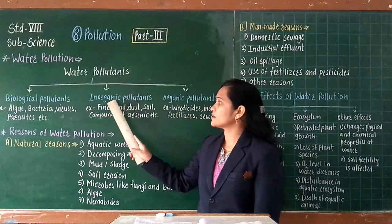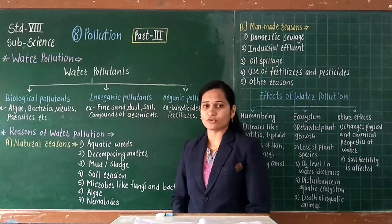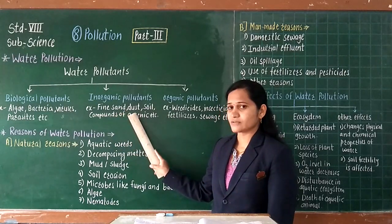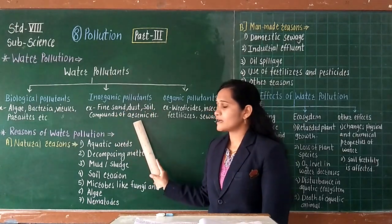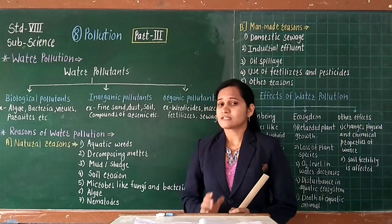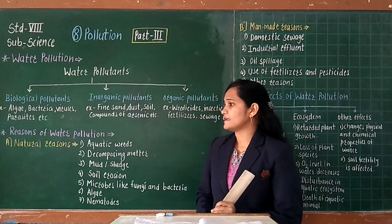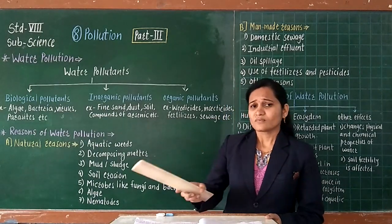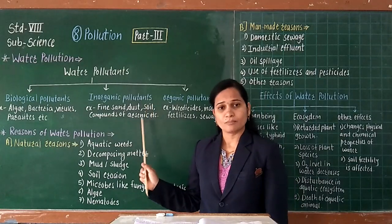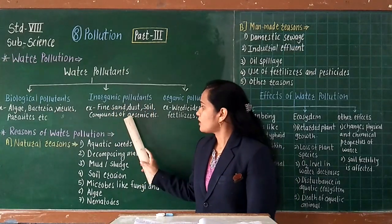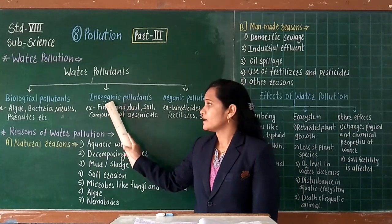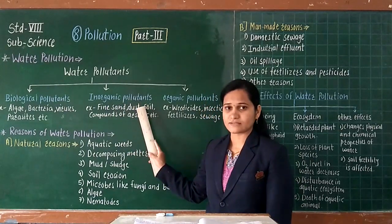The second type of pollutant is inorganic pollutants. In that, fine sand, dust, soil, and compounds of arsenic, mercury, and lead are examples. If such compounds like arsenic, lead, and mercury get added into the water, the water becomes polluted. These examples are all coming under inorganic pollutants.